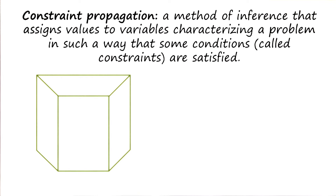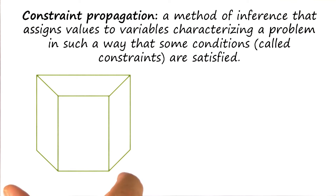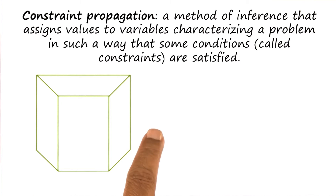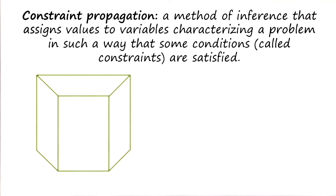We'll look at the details of constraint propagation in a minute. But first notice there are two possible interpretations to this particular 3D object. One can look at it as if one were looking inside a box; alternatively, one can look at it as if one were looking at a building. This means that constraint propagation need not necessarily always succeed in disambiguating between different kinds of assignments of surfaces and orientations. Sometimes multiple interpretations can simultaneously satisfy all the constraints. It is also possible that no assignment of values to variables will satisfy all the constraints, in which case the interpretation becomes very difficult.